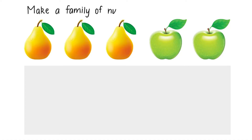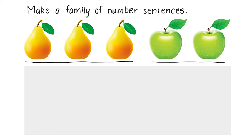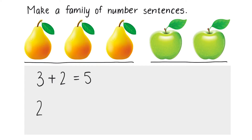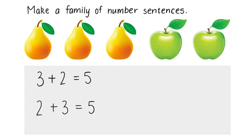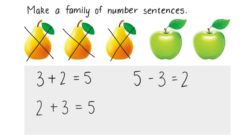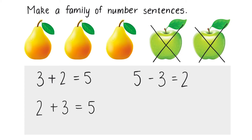Let's make a family of number sentences. 2 plus 3 equals 5. 5 take 3 is 2. 5 minus 3 equals 2. 5 take 2 is 3. 5 minus 2 equals 3. We have made a family of number sentences.